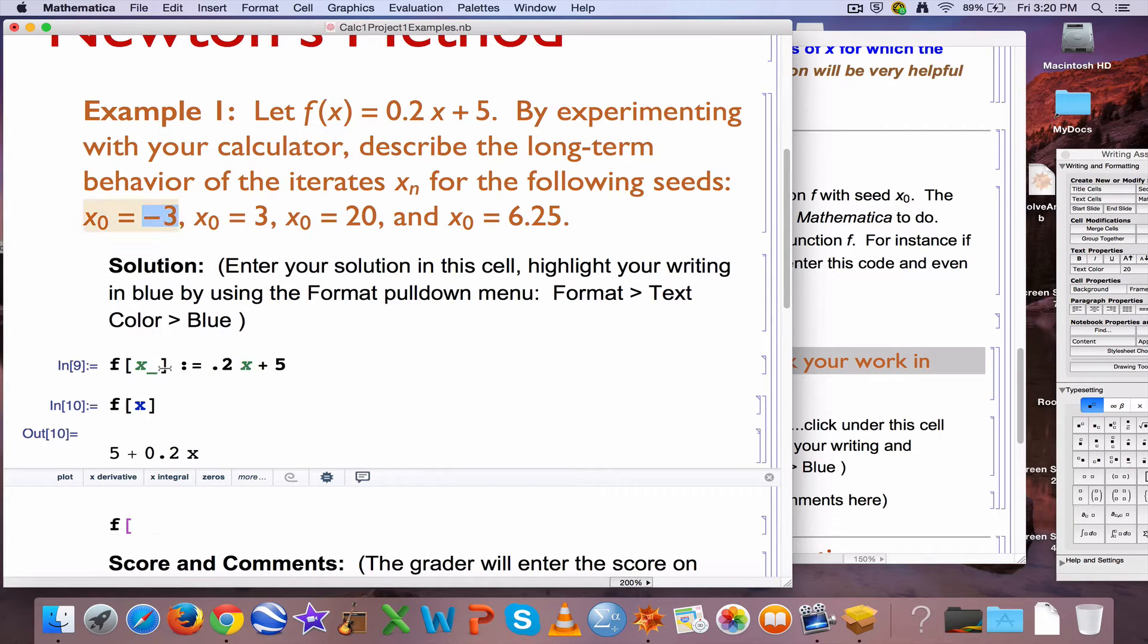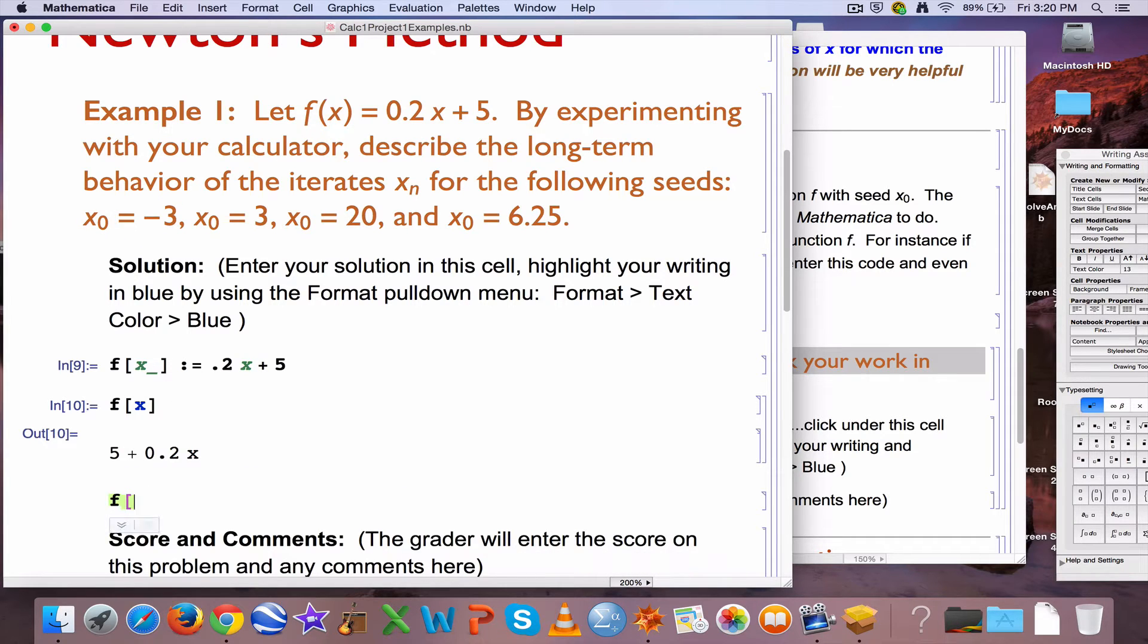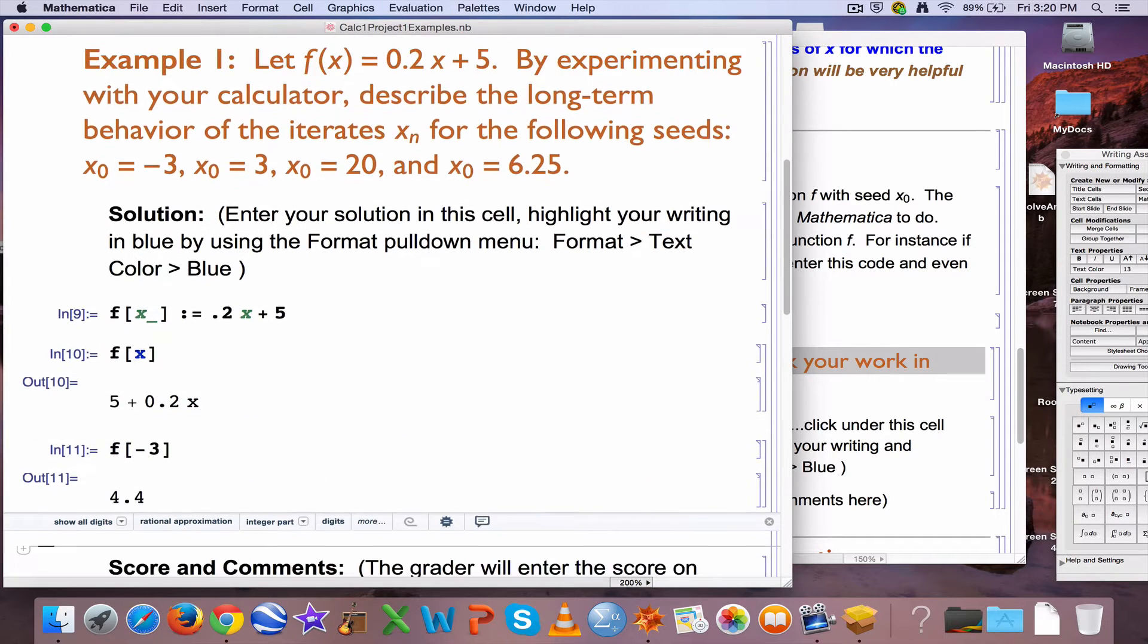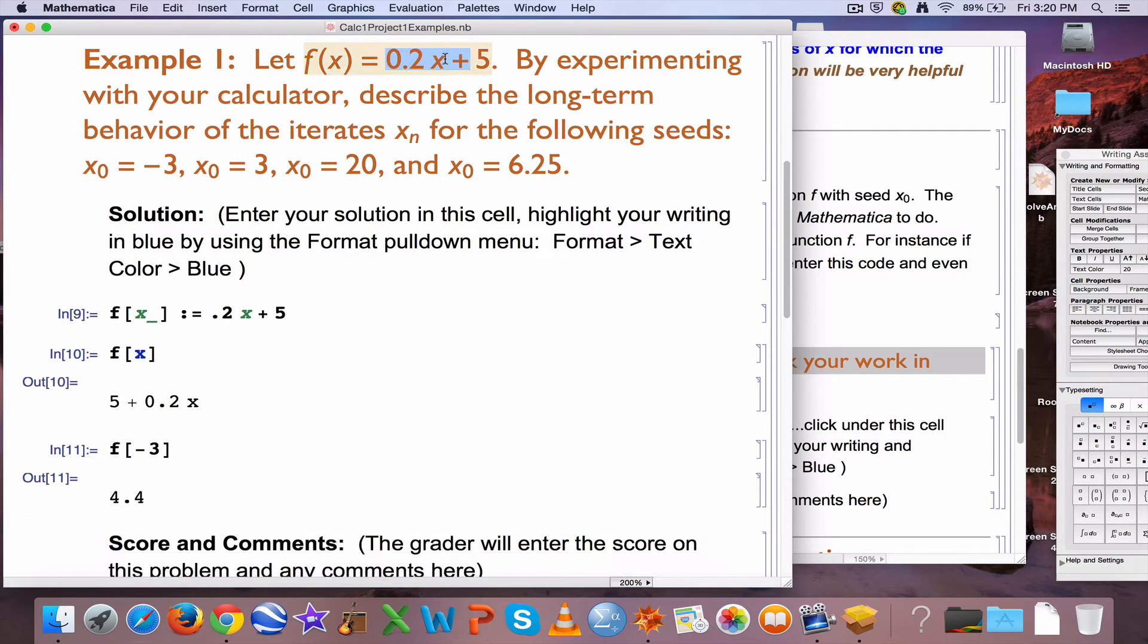I can plug a number in, like say this first seed, negative 3, and see what the output is, it's 4.4, and you can check that with your calculator, 0.2 times negative 3, I can do it in my head, is negative 0.6 plus 5 is going to be 4.4.